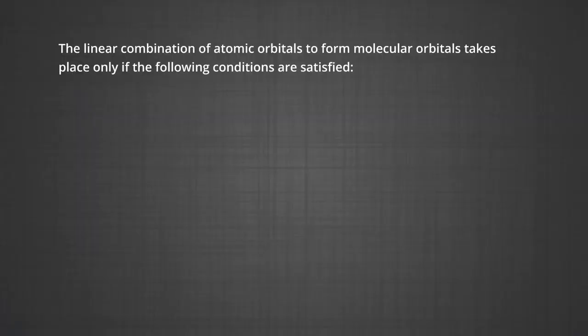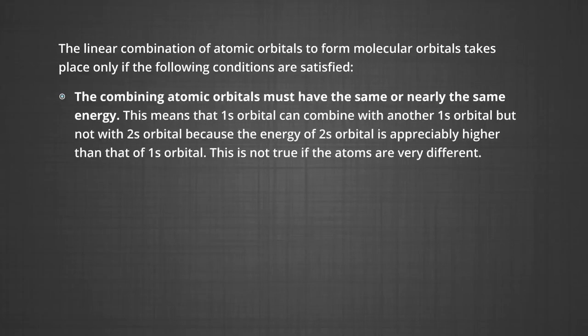The conditions for the combination of atomic orbitals: linear combination of atomic orbitals to form molecular orbitals takes place only if the following conditions are satisfied. First, the combining atomic orbitals must have the same or nearly the same energy. This means that the 1s orbital can combine with another 1s orbital, but not with the 2s orbital, because the energy of the 2s orbital is appreciably higher than that of the 1s orbital.